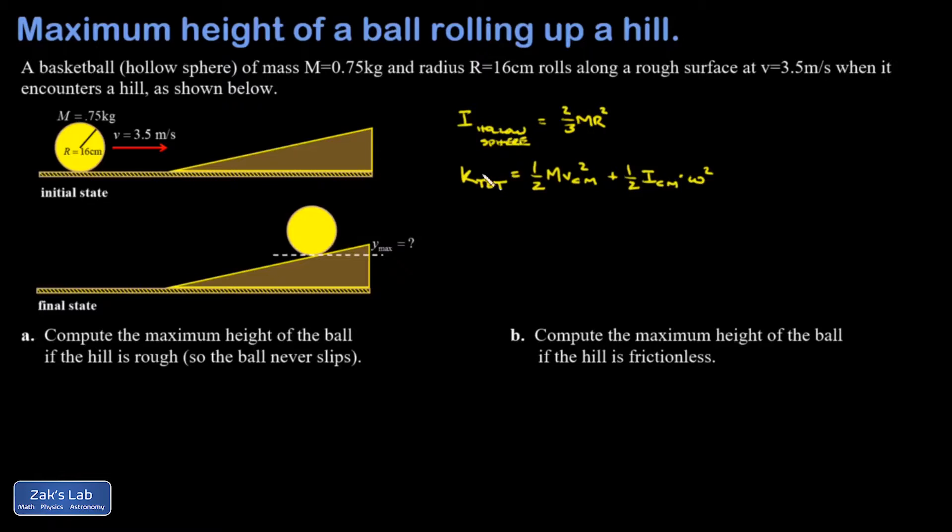The third thing I want to bring up is the rolling without slipping condition. If an object is rolling without slipping, by a clever change of frame of reference we're able to figure out that the speed of the center of mass is going to be equal to the radius of the rolling object times its angular velocity.